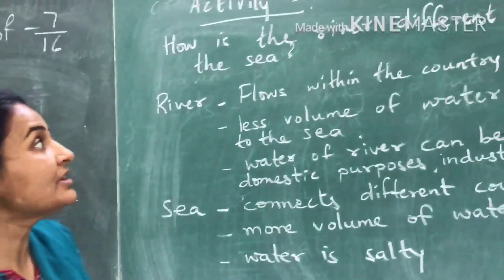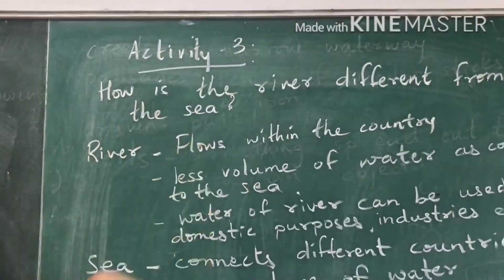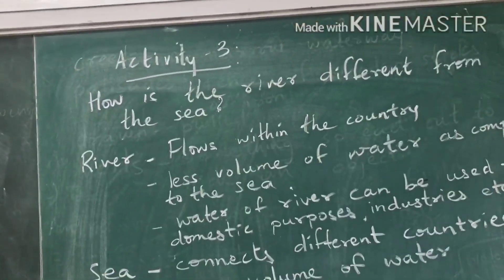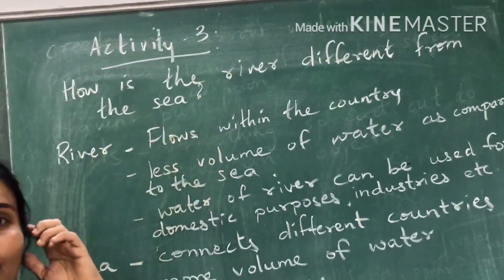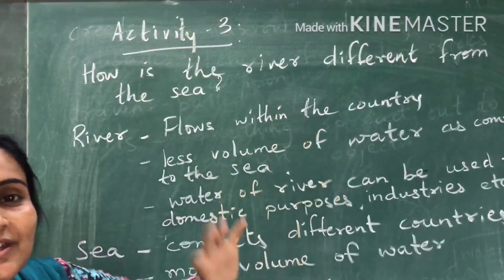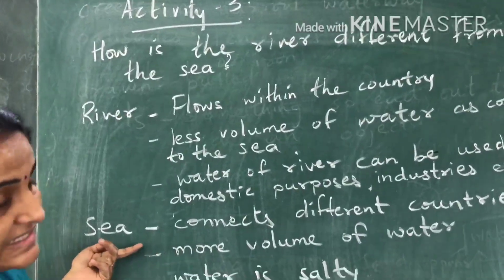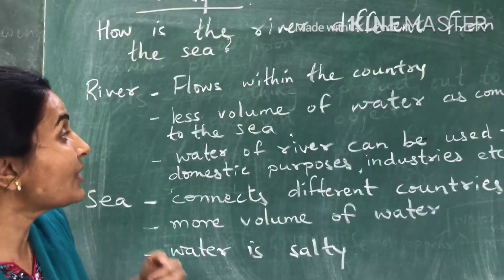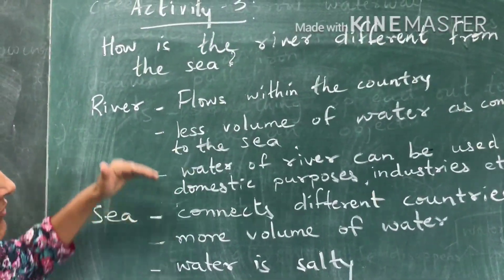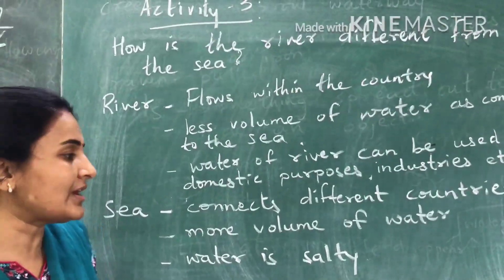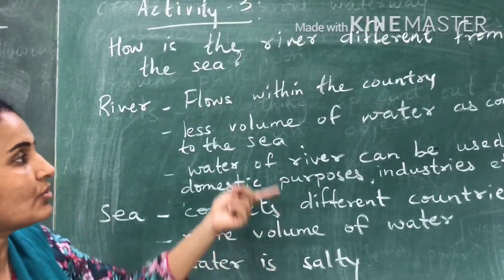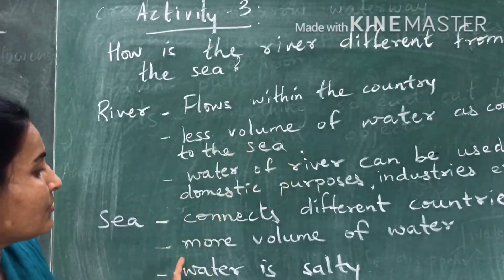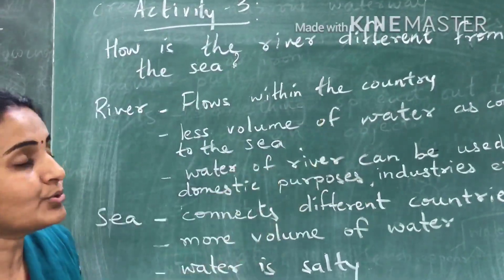Page 53 of your lesson has a question: how is the river different from the sea? First, rivers flow within a country, while the sea is a bigger water body connecting different countries. Second, the volume of water in the sea is much greater than in the river.